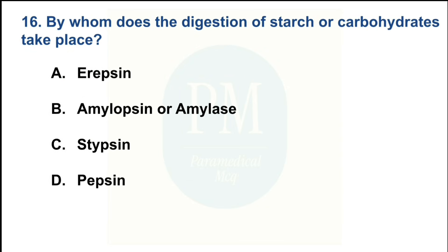By whom does the digestion of starch or carbohydrates take place? Option A — eclapsia (unclear); Option B — amylase; Option C — trypsin; Option D — pepsin. The correct option is Option B: amylase.